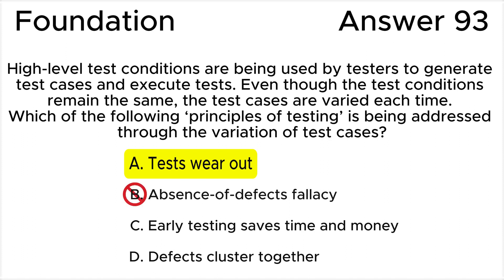Answer B is invalid because the absence of defects fallacy principle is concerned with ensuring that users' needs are fulfilled even if lots of testing is done and no defects are found — i.e., validation is also necessary. The use of high-level test conditions to generate test cases and execute tests does not directly address this concern.